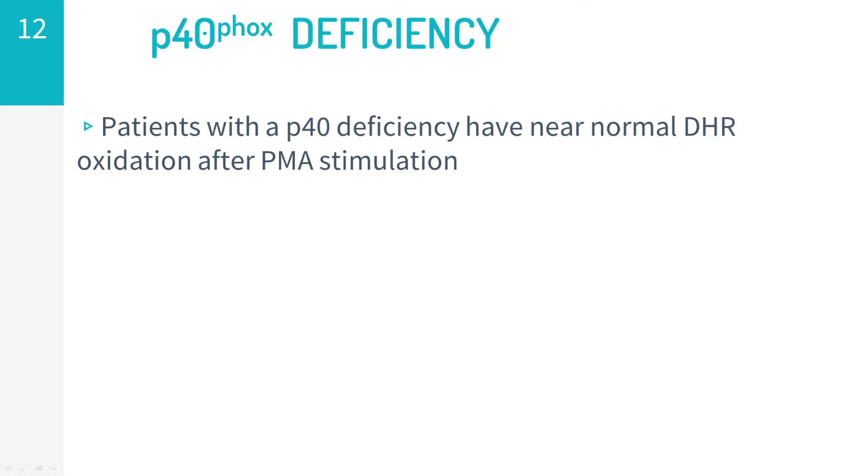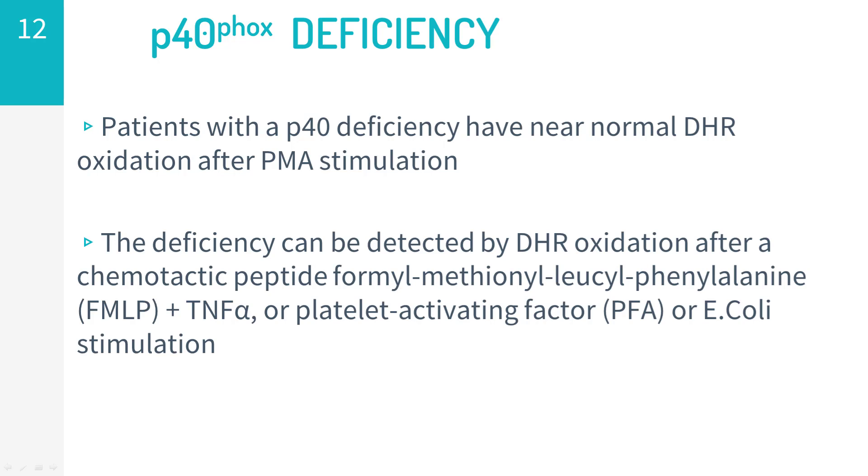Patients affected by CGD due to mutation in the P40 subunit may have abnormal results when the dihydrorhodamine test is performed after stimulation with PMA, as we've described here. An alteration of DHR oxidation can only be seen after a chemotactic peptide, formyl-methionyl-leucyl-phenylalanine, or FMLP, plus TNF-alpha, or platelet activating factor, or E. coli stimulation. Therefore, when the clinical picture is typical for CGD, this diagnosis cannot be completely ruled out with a normal DHR oxidation, and further explorations should be pursued.